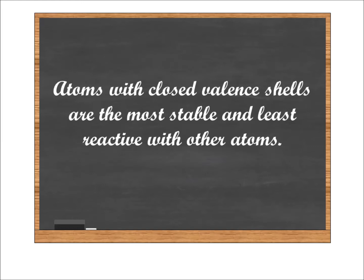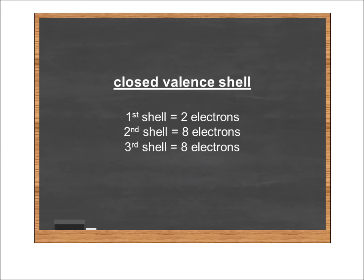So what determines whether a shell is closed or not? Well, it's all about the number of electrons within the shell. The first shell is closed when it's occupied by two electrons. The second shell is closed when it's occupied by eight, and the third shell is closed when it's occupied by eight.